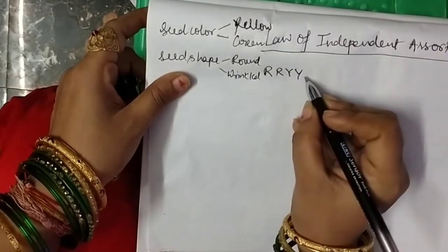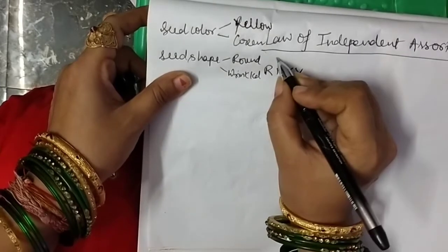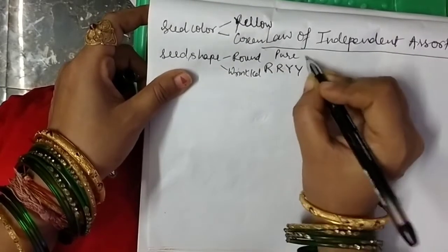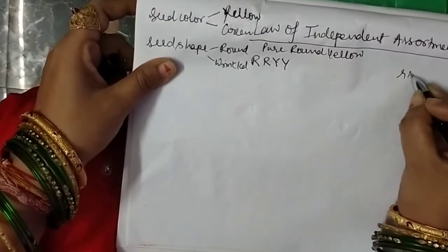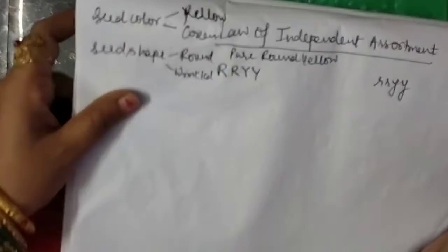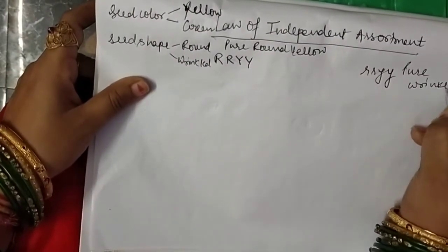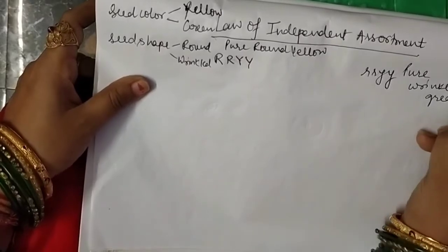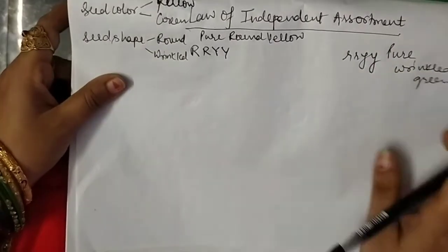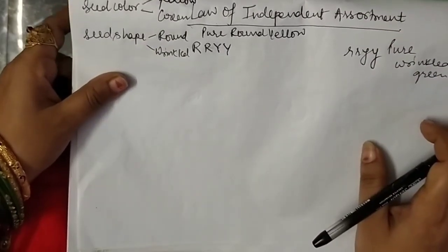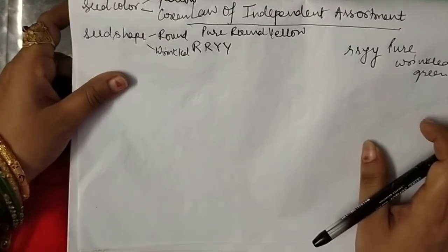Whenever we write the combination of genes or genotype, we should write what they are showing. One parent is pure round and yellow, represented as RRYY. The other is pure wrinkled and green, represented as rryy. It means one pair has dominant characters and the other has recessive characters — round yellow and wrinkled green. And as Mendel stated in the first law, in the first generation the dominant character always shows itself.